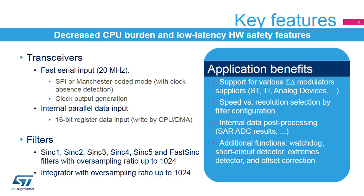Transceivers provide the serial connection to the external Sigma Delta modulator. They support serial connections with configurable protocols — SPI or Manchester-coded — and configurable parameters. Transceivers also support internal 16-bit parallel data inputs, which are written to the DF-SDM input data registers by the CPU or the DMA controller.